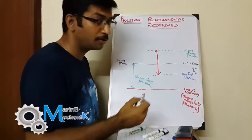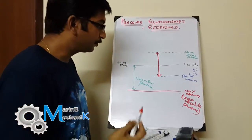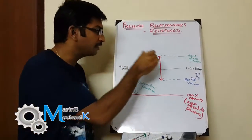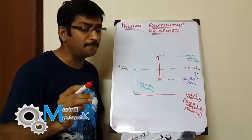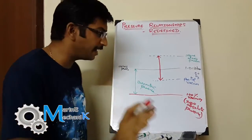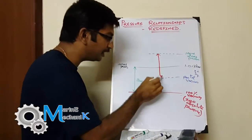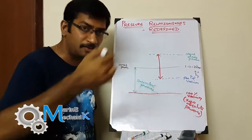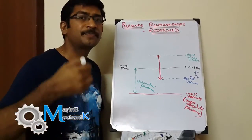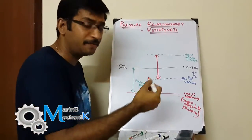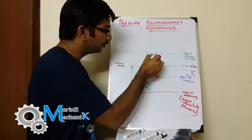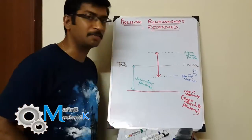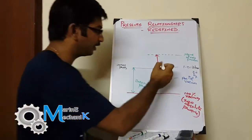The calibration and Bourdon tube of some gauges are designed to read below atmospheric pressure as well. So the more precise definition of gauge pressure is: the measurement of pressure that is above atmospheric pressure and also slightly below atmospheric pressure. I'll mark that range here as gauge pressure.